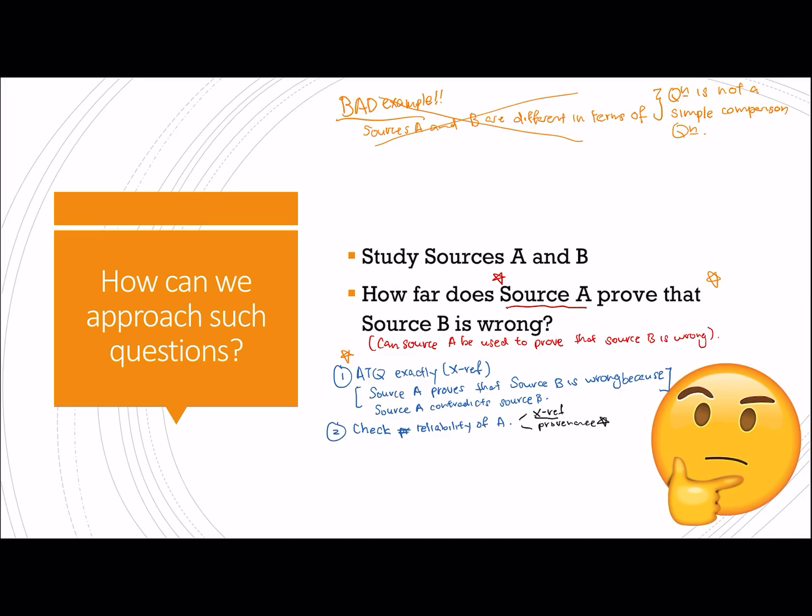But if you are not confident about it and you want to give yourself a safety net in terms of the level of marks that you can get, then you may choose to do cross-referencing first before moving on to provenance. But only do this if you really have the time. So remember in SBQ, especially under exam conditions, it is also about working smart and making sure that you are using your time efficiently.